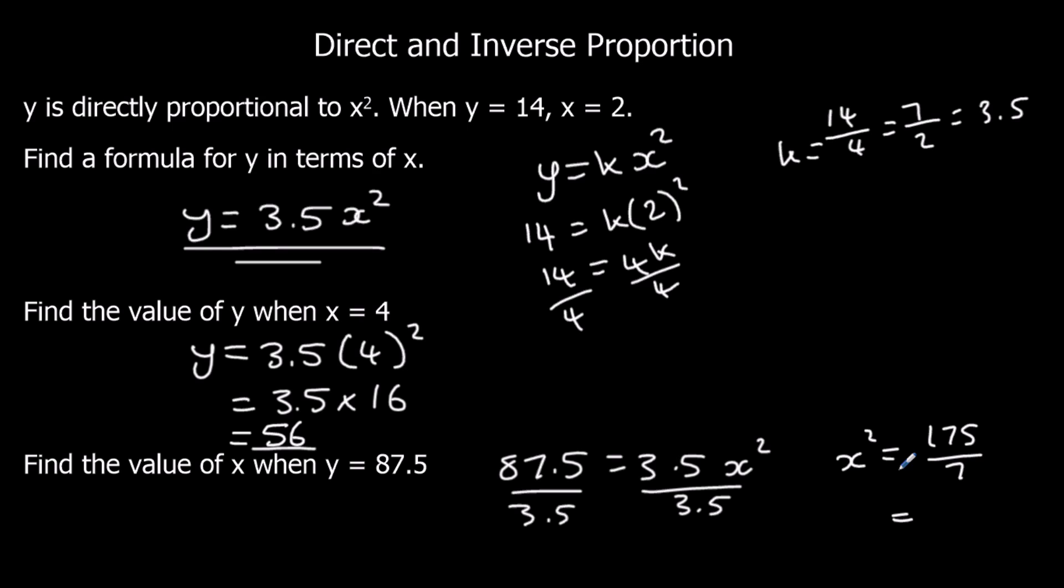10 sevens are 70. So 20 sevens are 140. We've got another 35, which is 5. So it's 25. x squared is 25. So that means x is plus or minus 5.